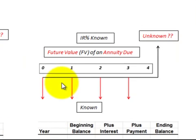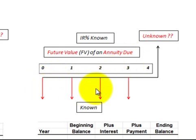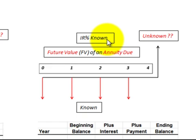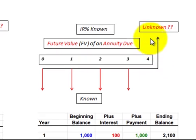Now let's calculate the future value of annuity due payments. Annuity due payments are equal payments received at the beginning of each period — in this case, at the beginning of each year — and we discount those payments forward to determine their future value. We need to know the interest rate, the value of the payments, and the time frame in which we receive or pay those payments, so we can determine the future value.